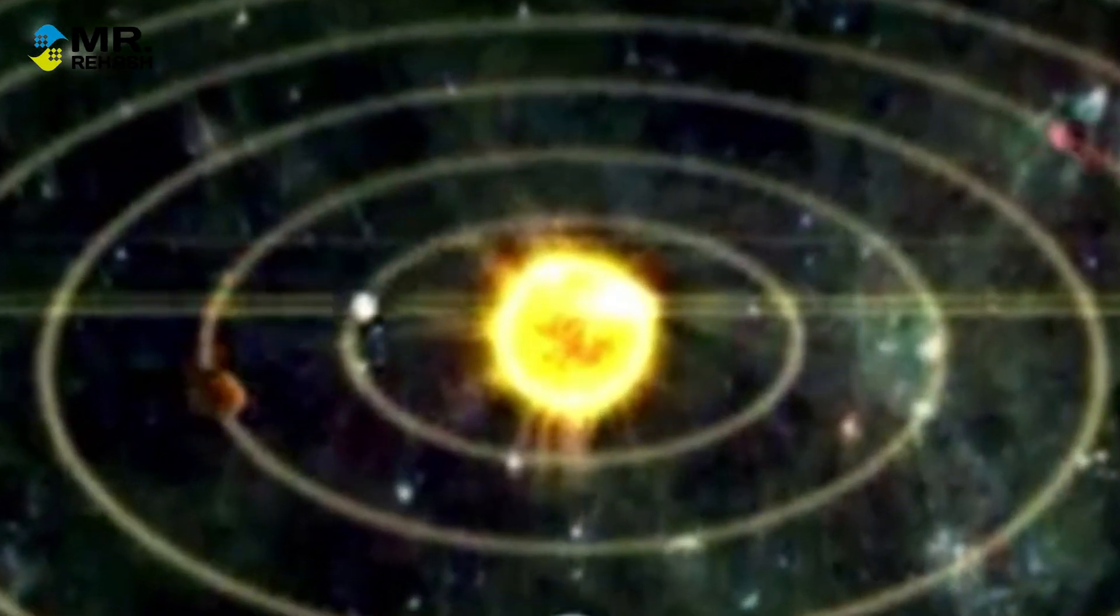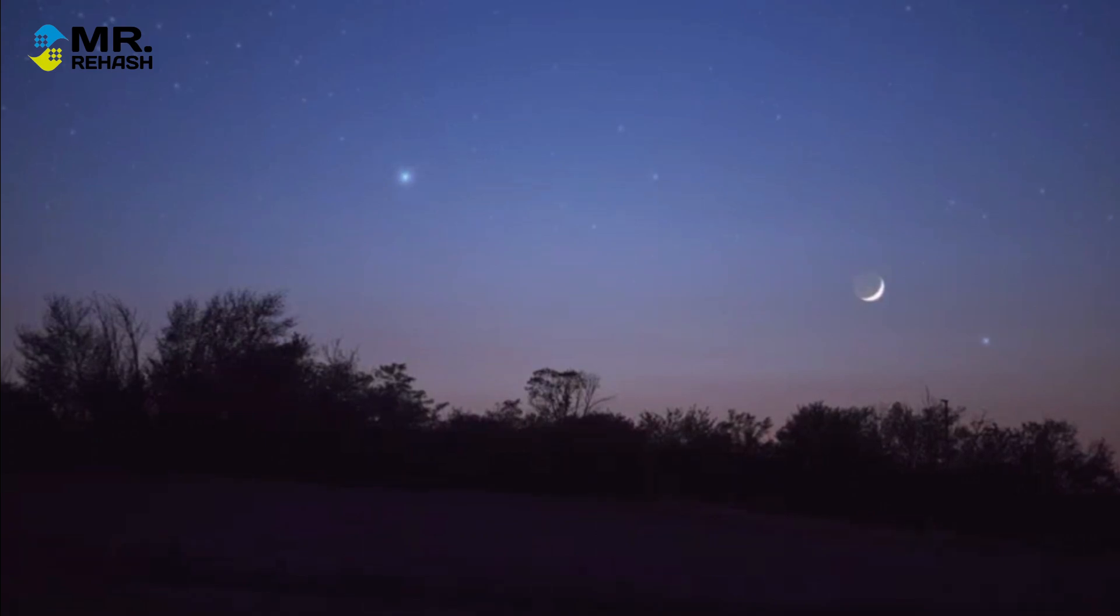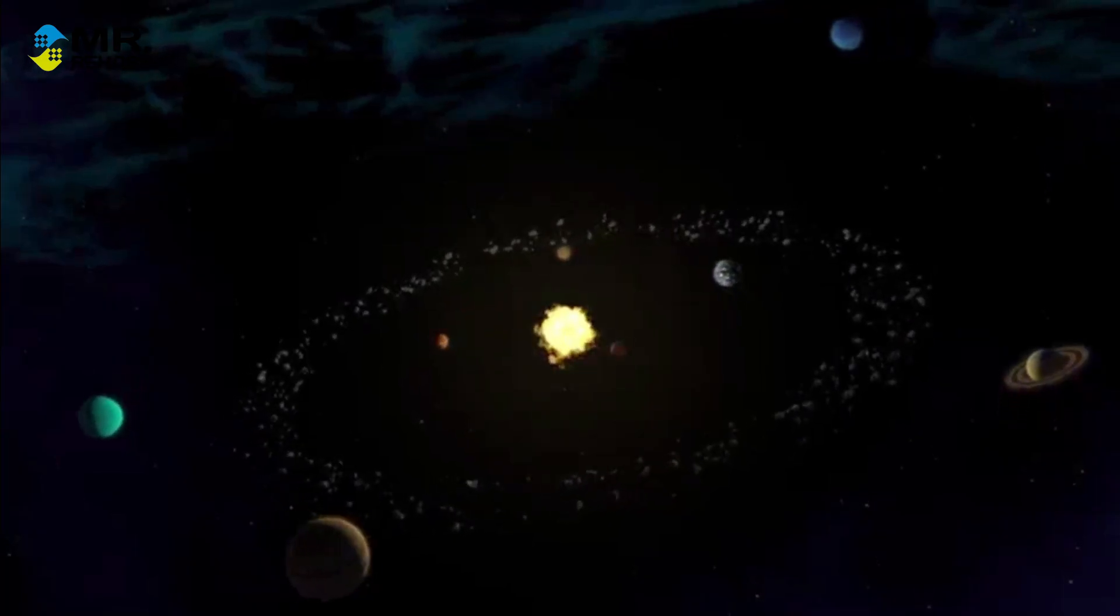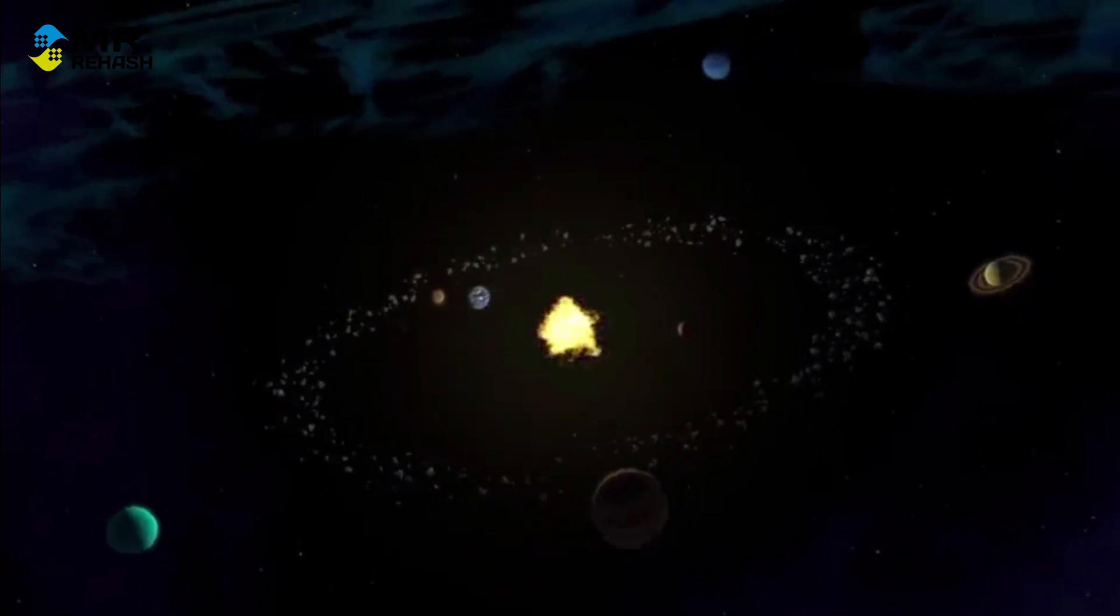Mercury and Venus, the two planets closest to the Sun, are primarily visible near sunrise or sunset when they're at their greatest elongation from the Sun. Even then, they are often mistaken for bright stars due to their limited visibility in our sky.